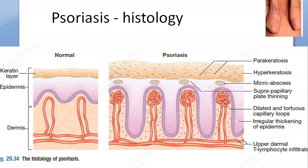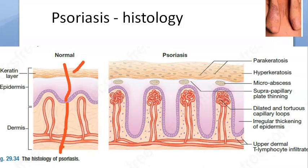In the exam if they ask you about psoriasis, explain this and you will get a lot of marks. This is the histology — you can see the changes in the skin. In normal skin, you have the epidermis here and from here to here you have the dermis. In the epidermis you have many layers; we will focus only on the keratin layer and the other layers in the epidermis.